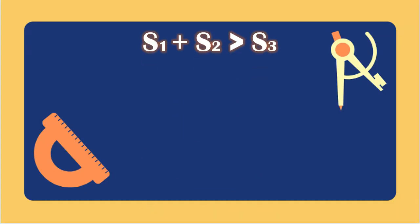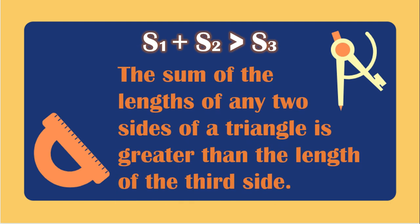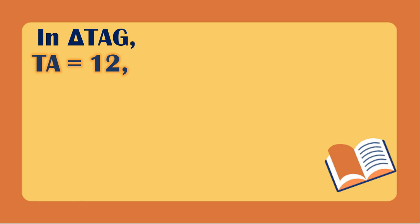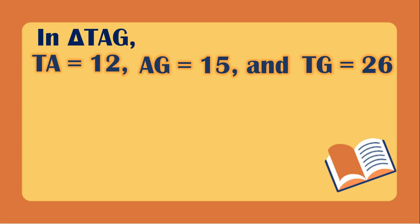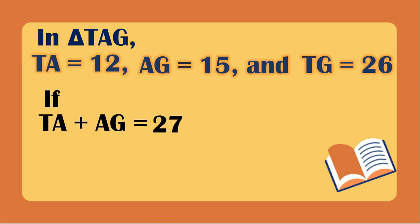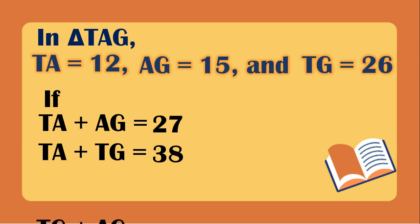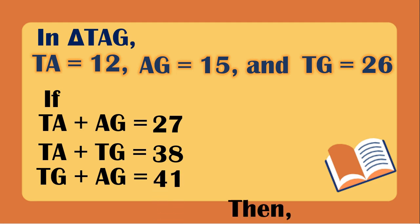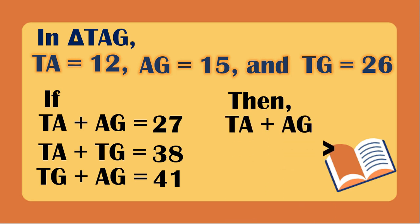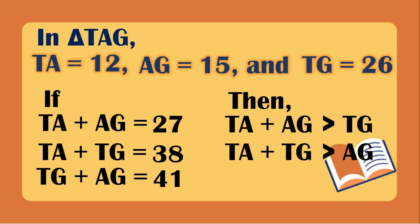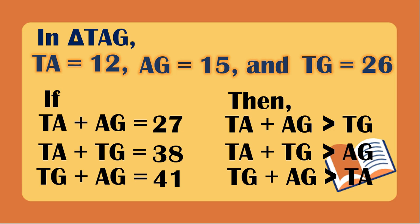Let's have the third theorem: the sum of any two sides of a triangle is greater than the third side. In triangle TAG, TA is 12, AG is 15, and TG is 26. TA plus AG equals 37, which is greater than TG at 26. TA plus TG equals 38, which is greater than AG. TG plus AG equals 41, which is greater than TA. The sum of any two sides is always greater than the third side.